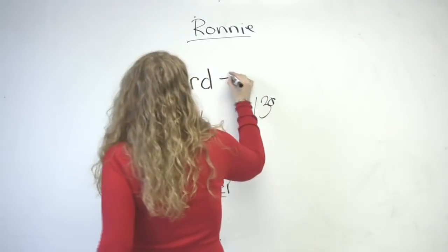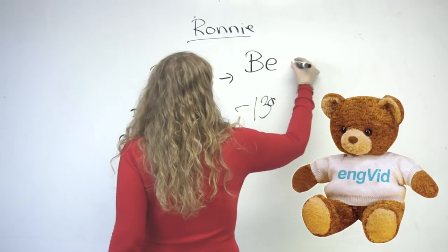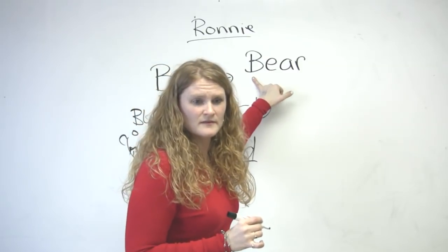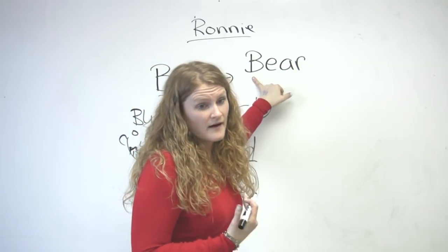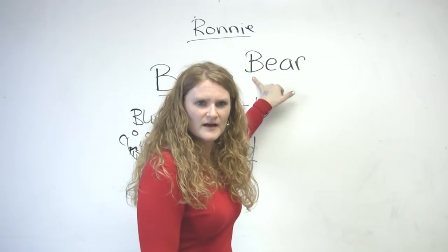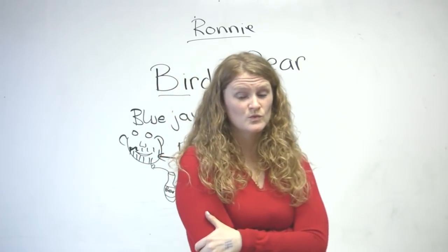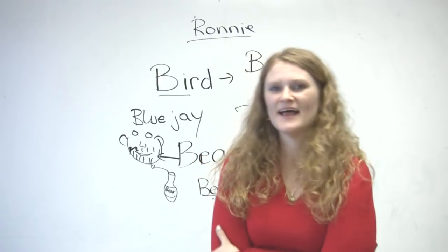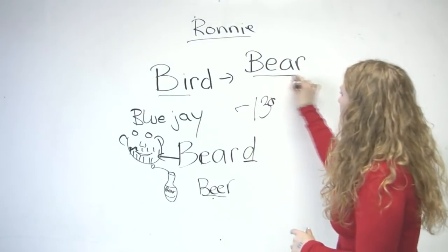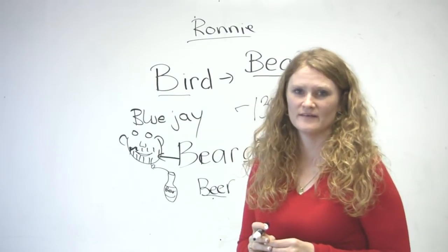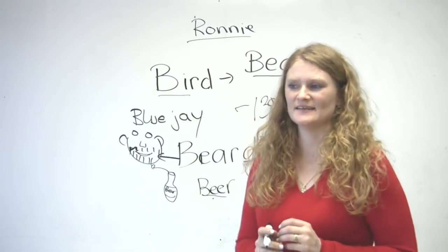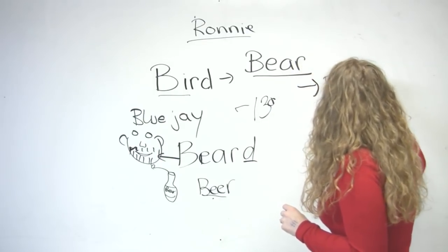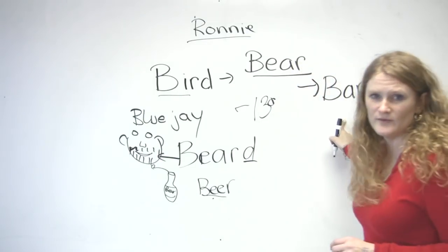A bear is another kind of animal. Do you have bears in your country? We have bears in Canada. I've never seen a real live bear except at the zoo. Have you been to a zoo? They're like animals in cages. Anyways, the way we say this animal is bear. We have another word that sounds exactly like this word, but we spell it differently.